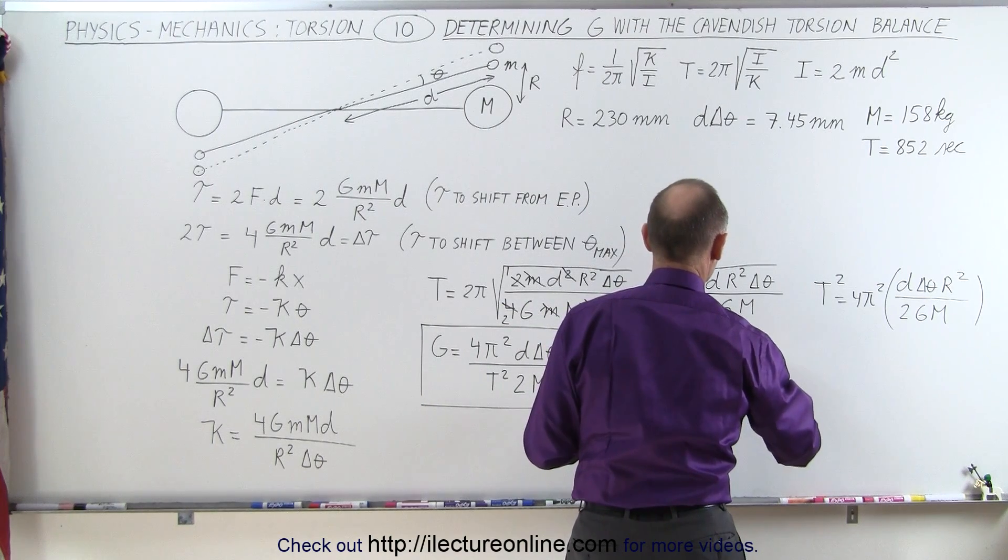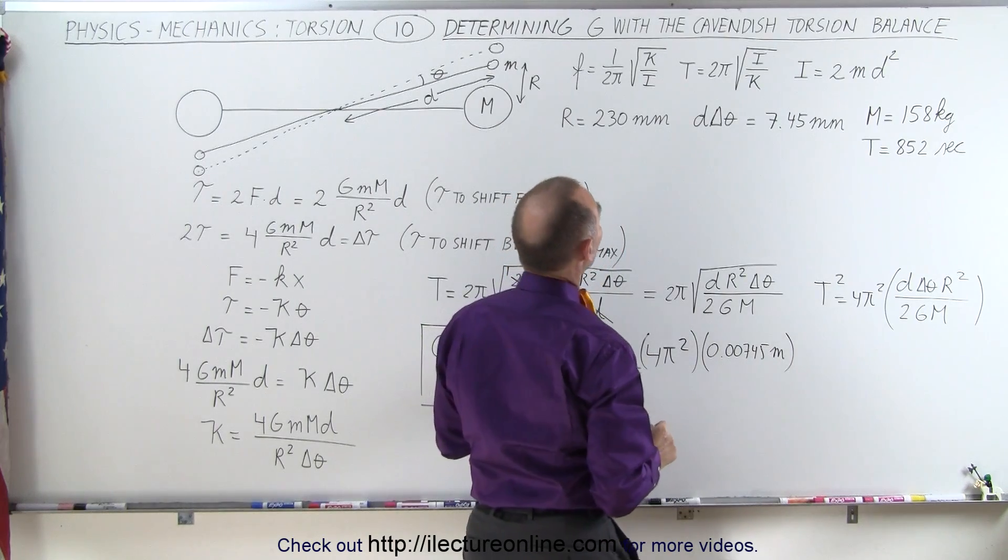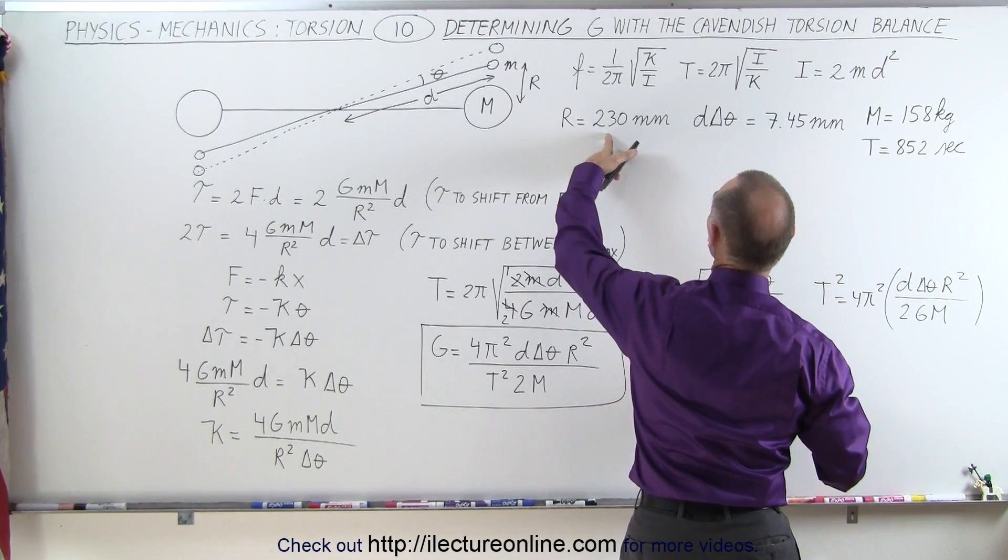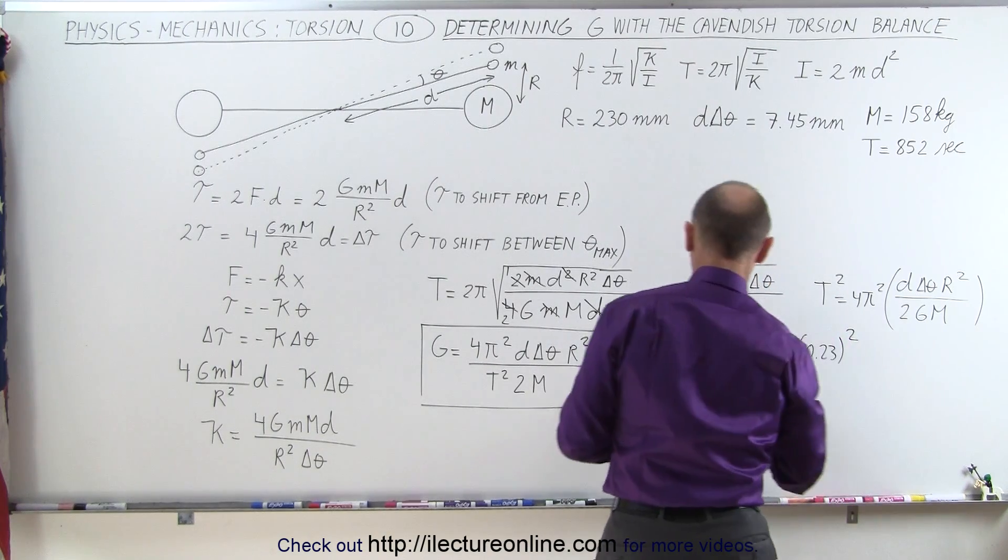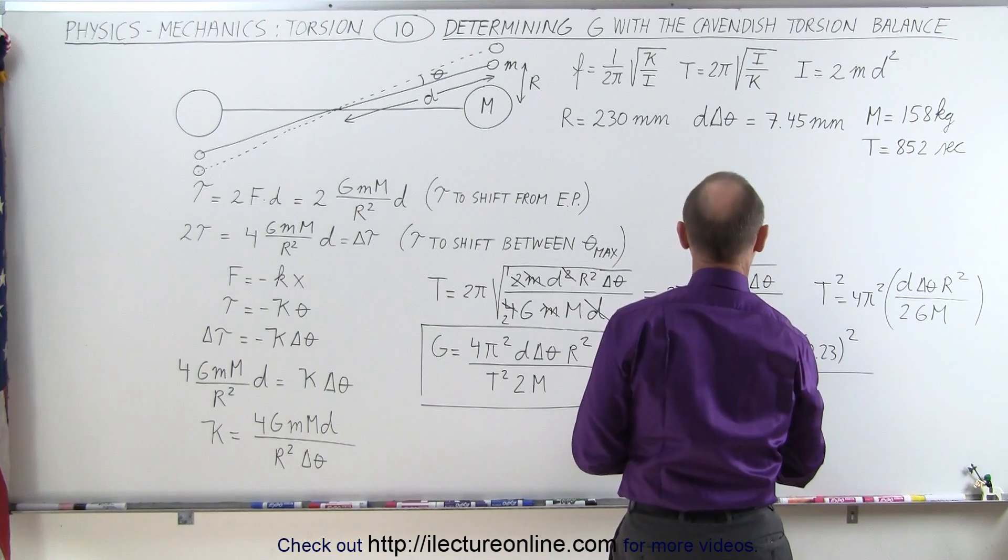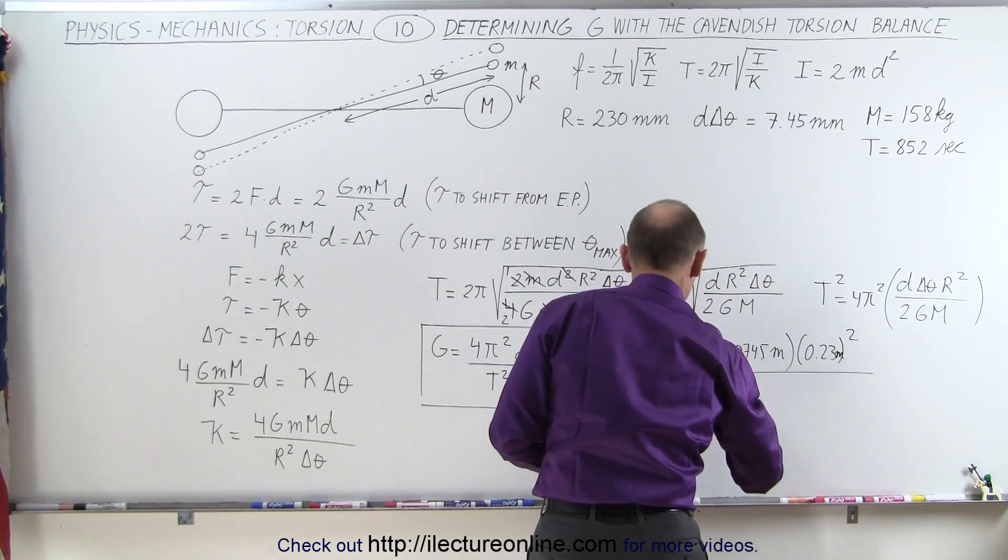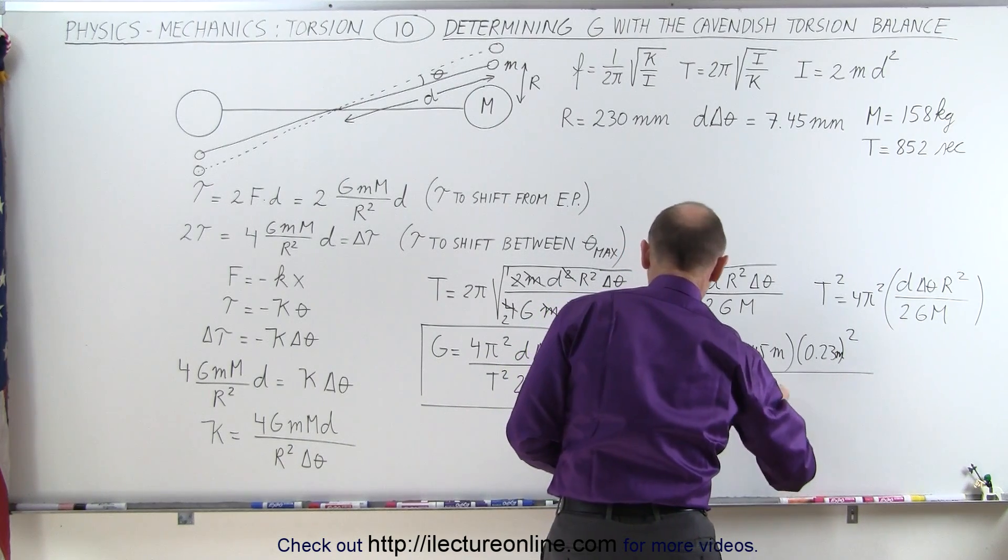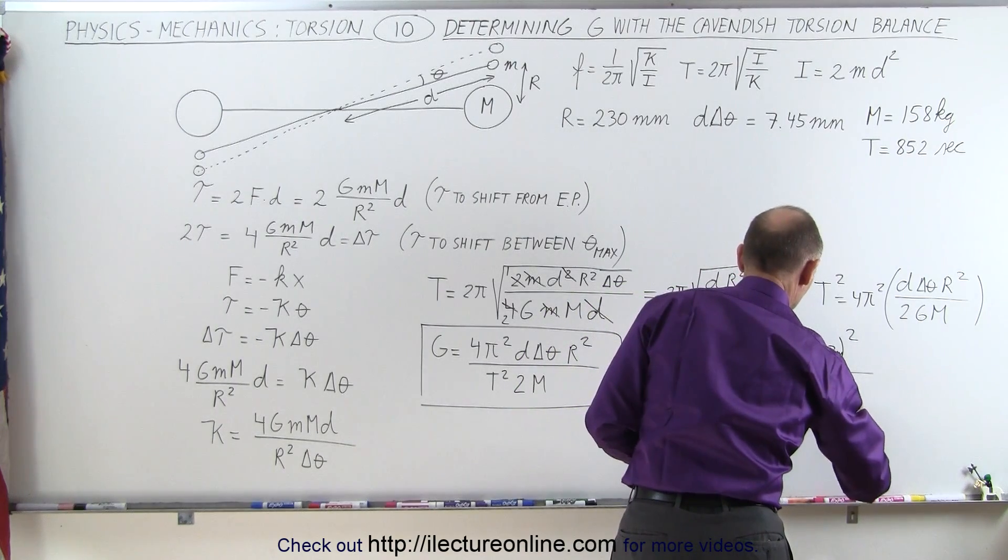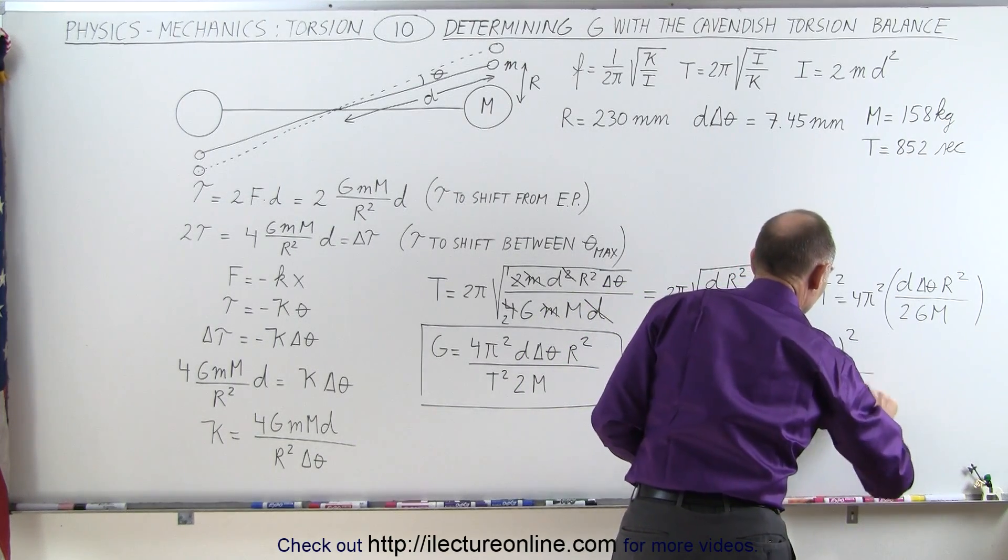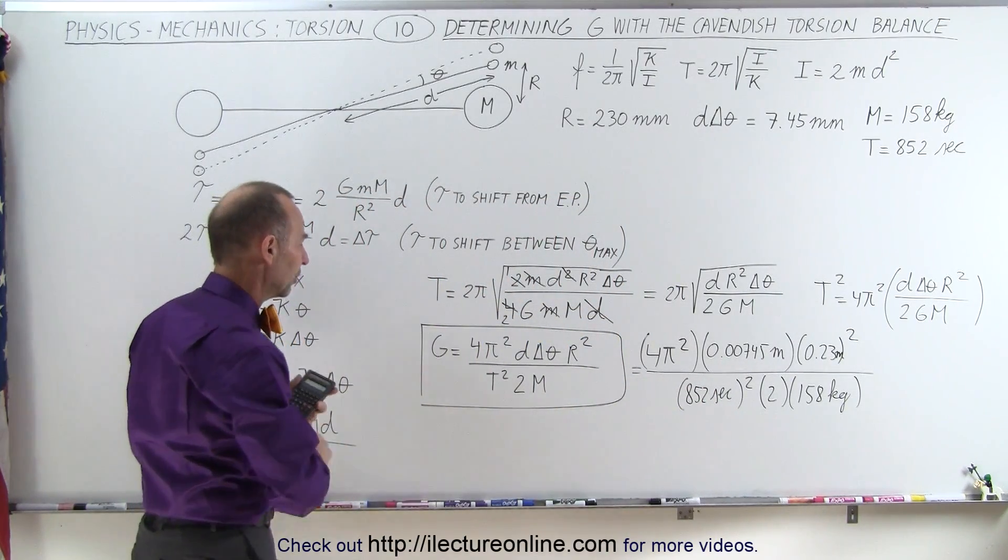So this would be equal to 4 pi squared multiplied times D delta theta, which is 0.00745 meters, because we have to convert to meters. R squared, convert to meters, the 230 millimeters is 0.23 meters squared. And divide the whole thing by the period. The period is 852 seconds. We have to square that times 2 and times the mass of 158 kilograms. I've seen references where they said that was closer to 154 kilograms. I'm not sure what the actual value was.